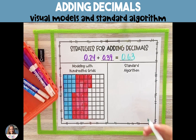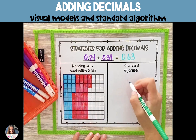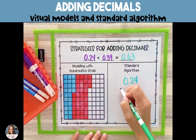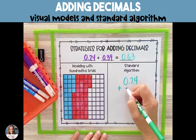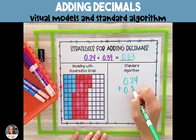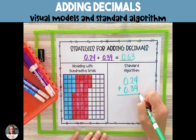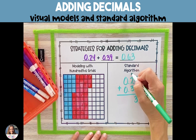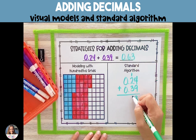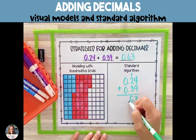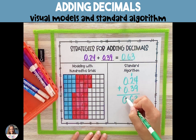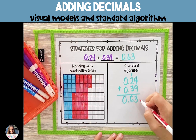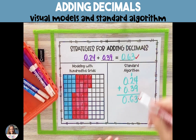For the standard algorithm, we're going to add our decimals just like we would with whole numbers. We're going to line up our place value — the easiest way to do this is by lining up your decimal point — and we're going to add each digit one at a time. We get an answer of 63, and we bring our decimal straight down into our sum so that the digits are still lined up by place value, for a final answer of 63 hundredths.